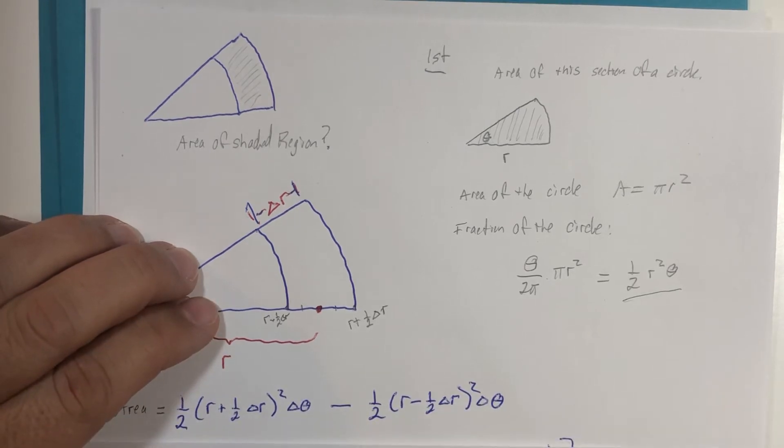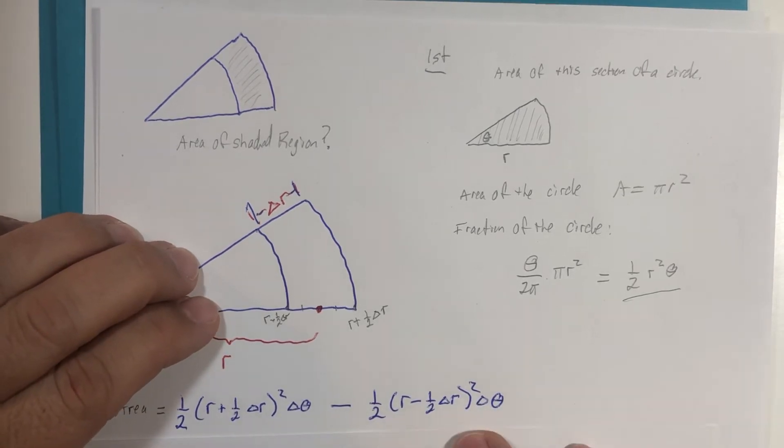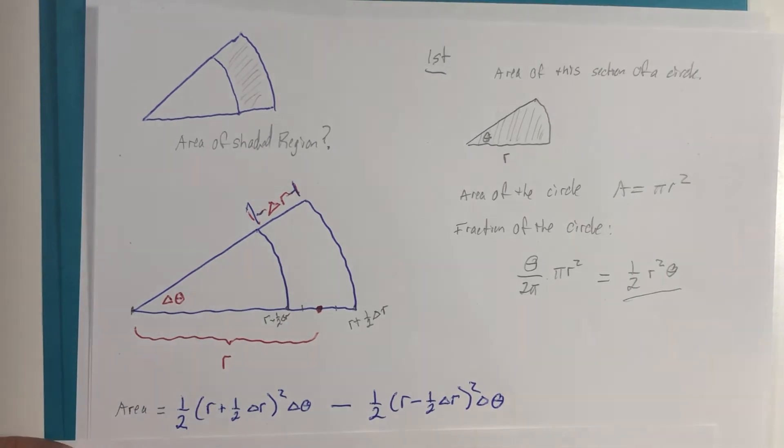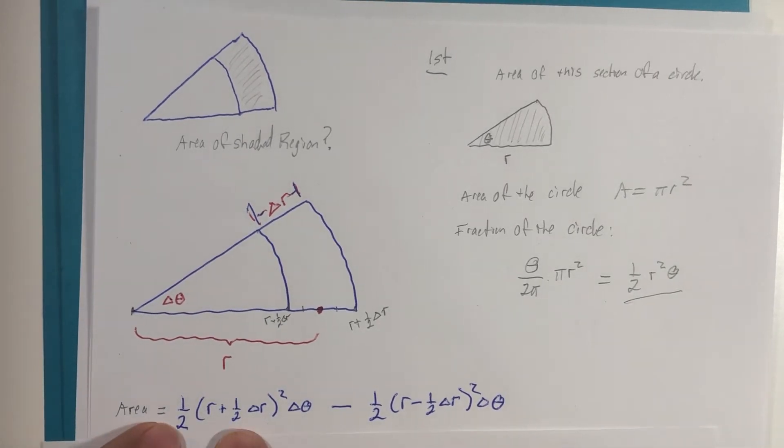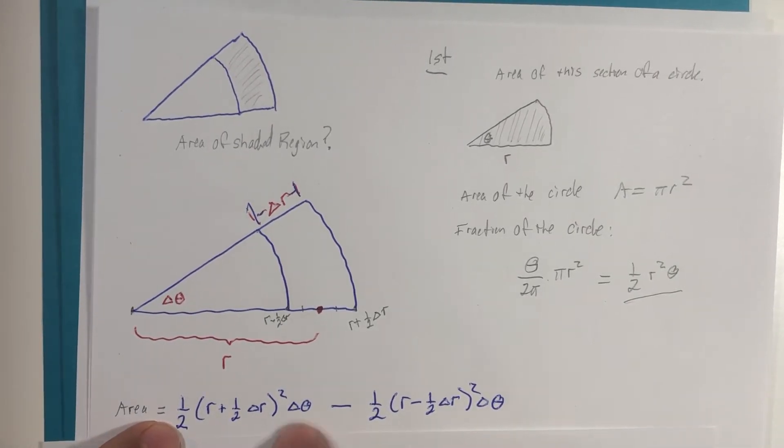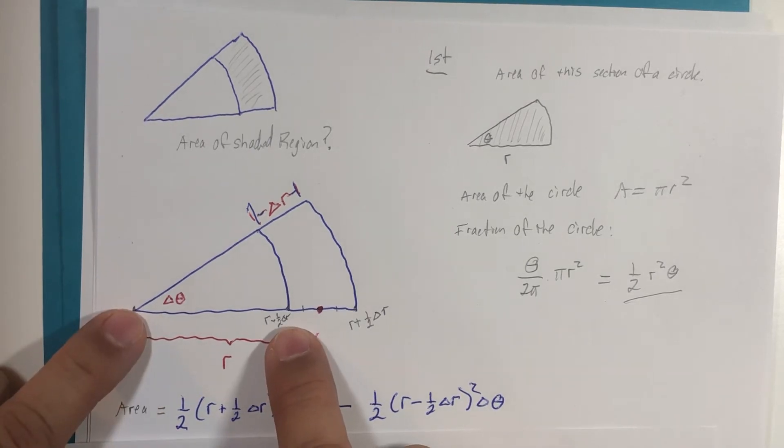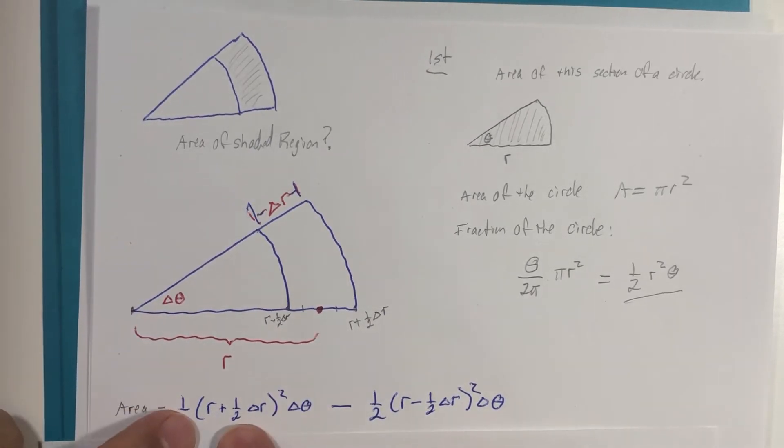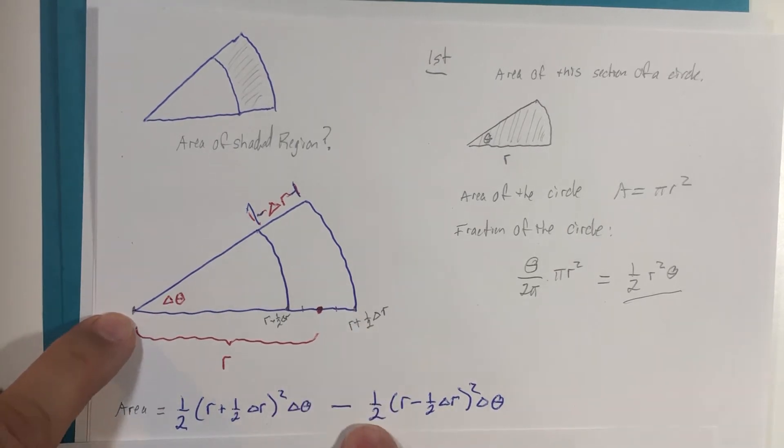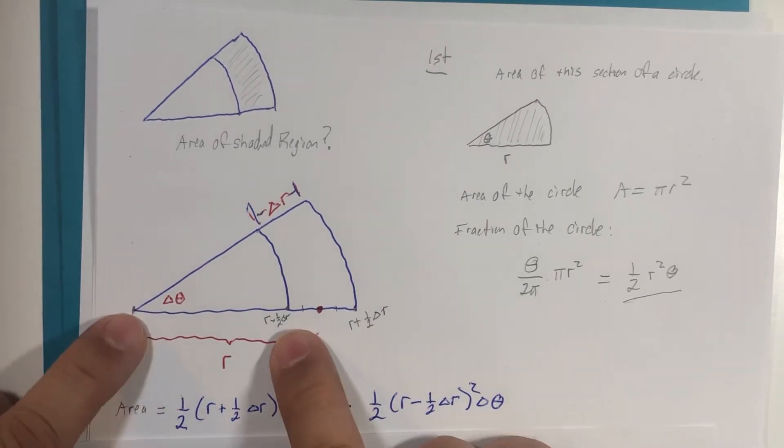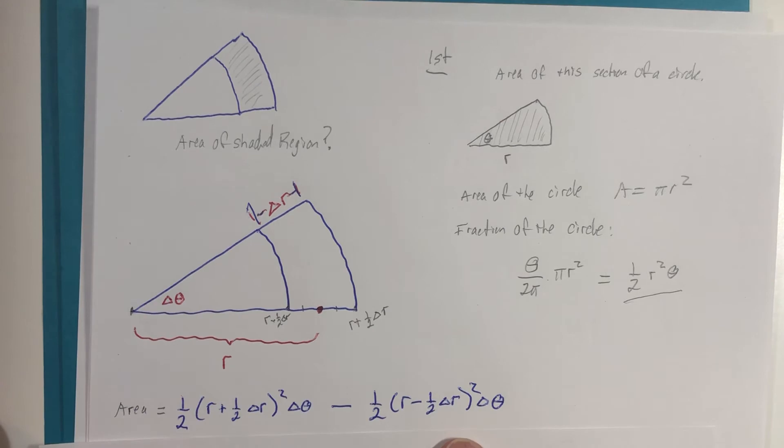When you write it out, it's a fun little algebra expression: one-half the radius squared Δθ—this one is that one minus this one, and I'm going to just let you look at the terms. Each of these is that formula but written out to represent the small radius and the large radius.